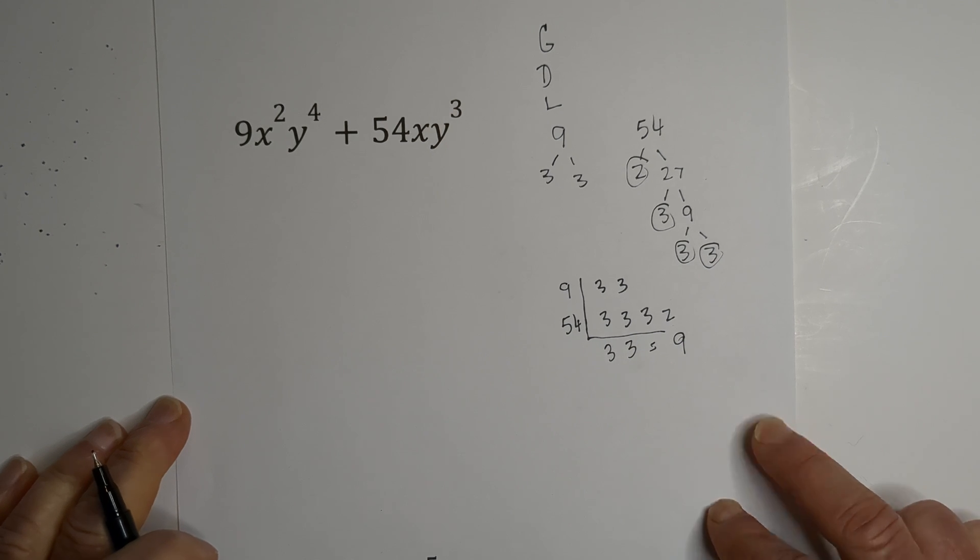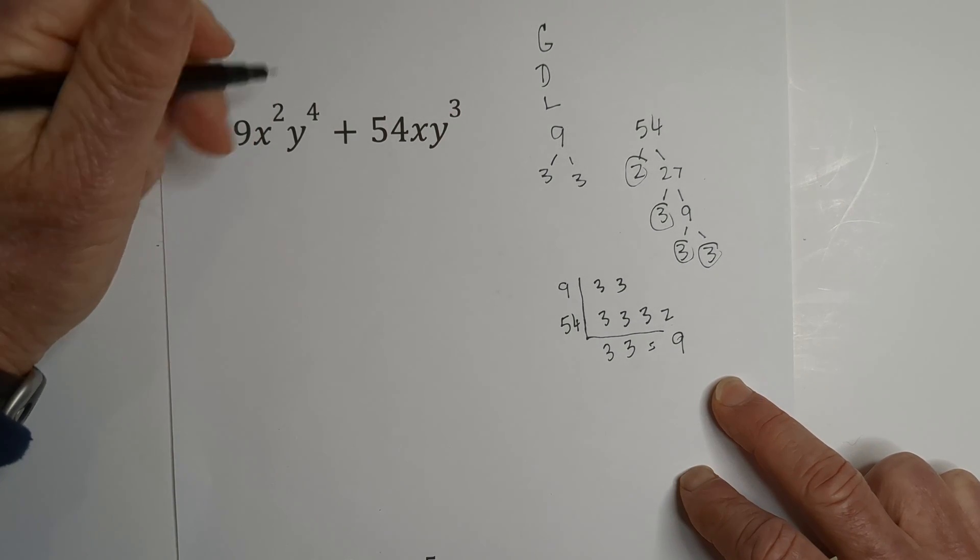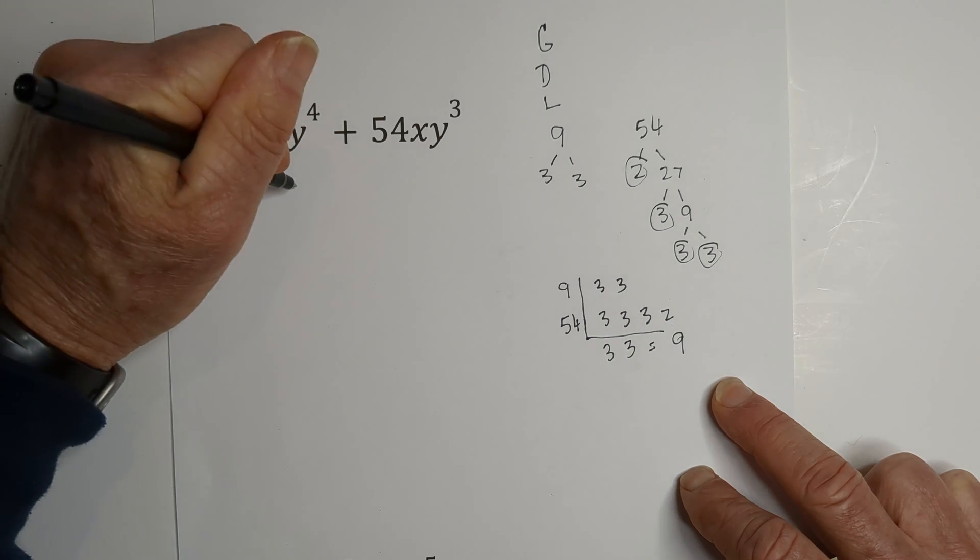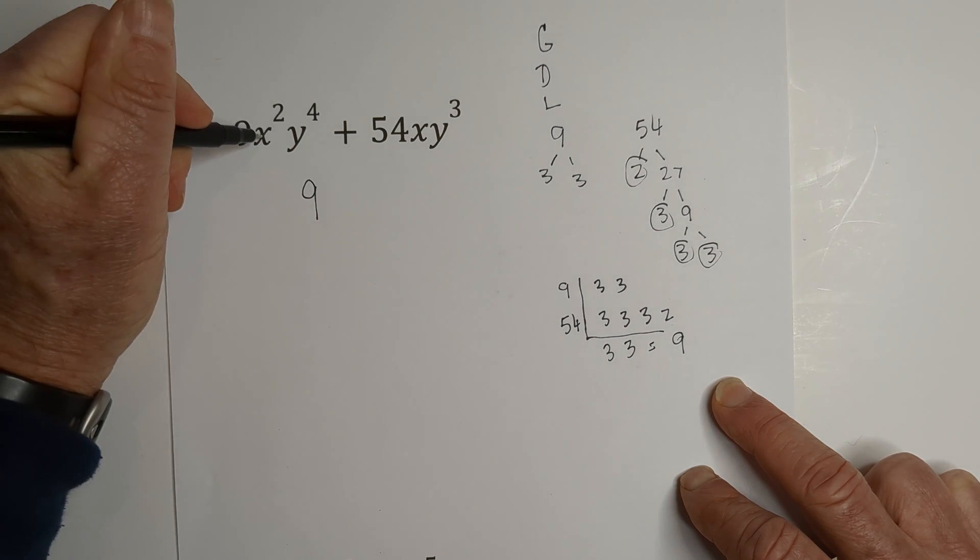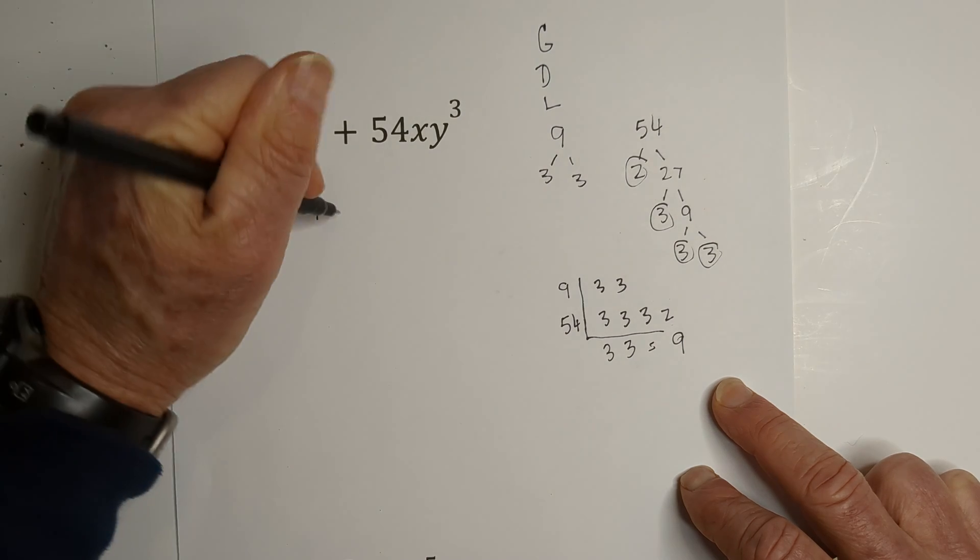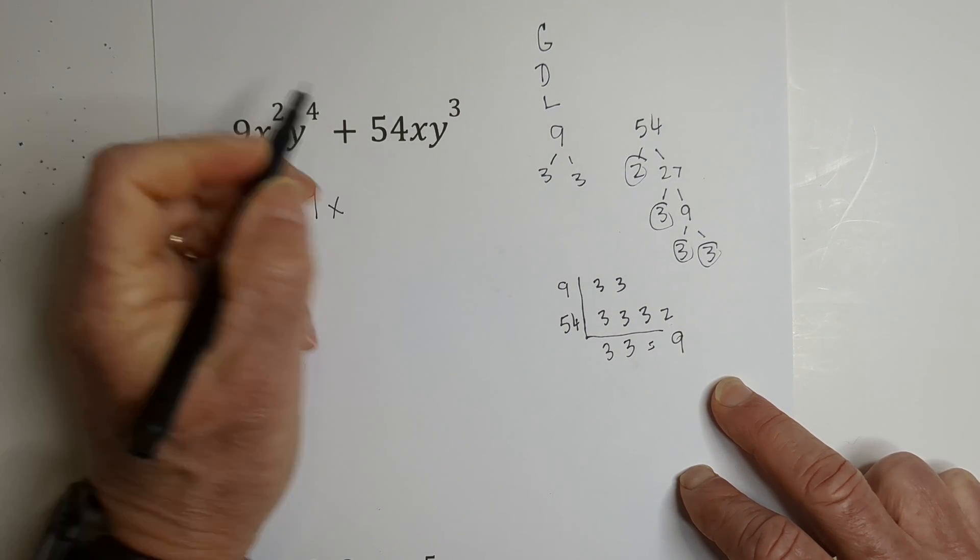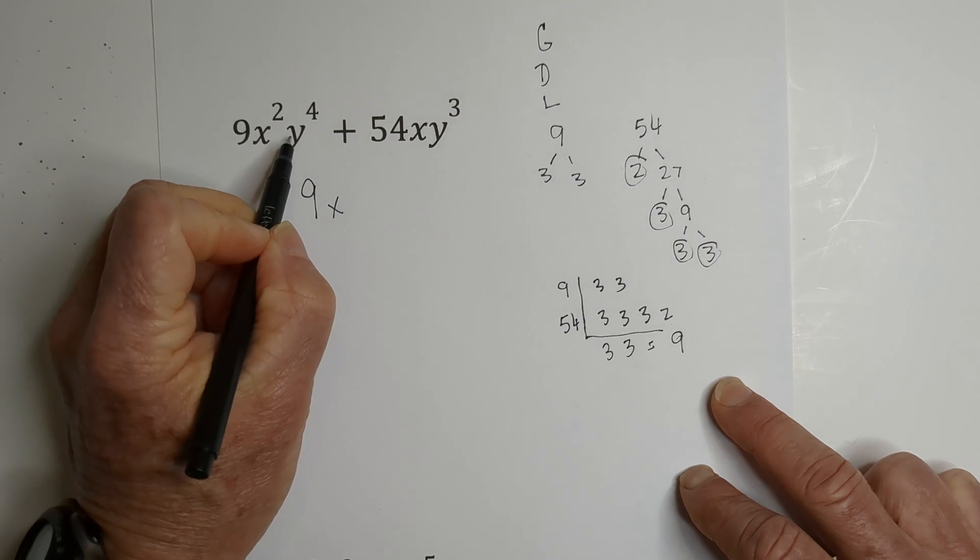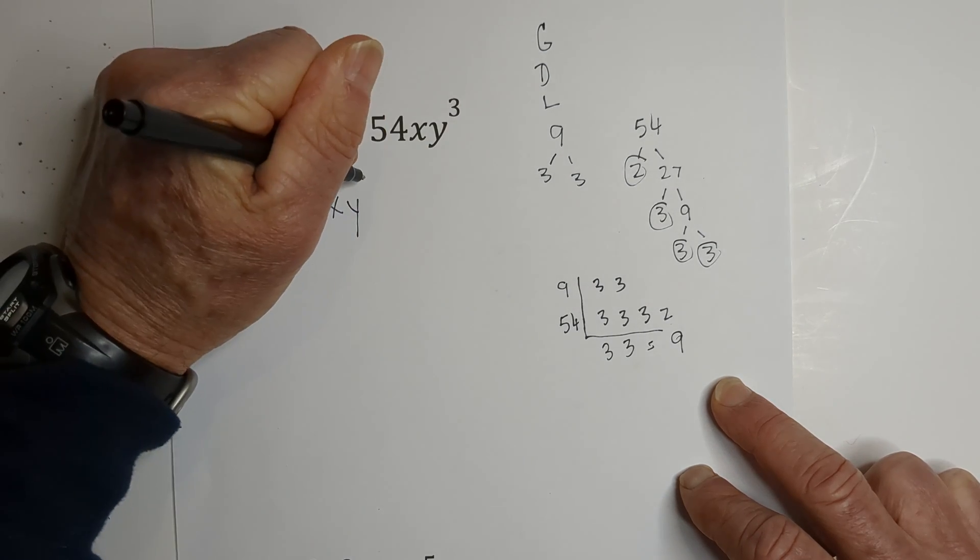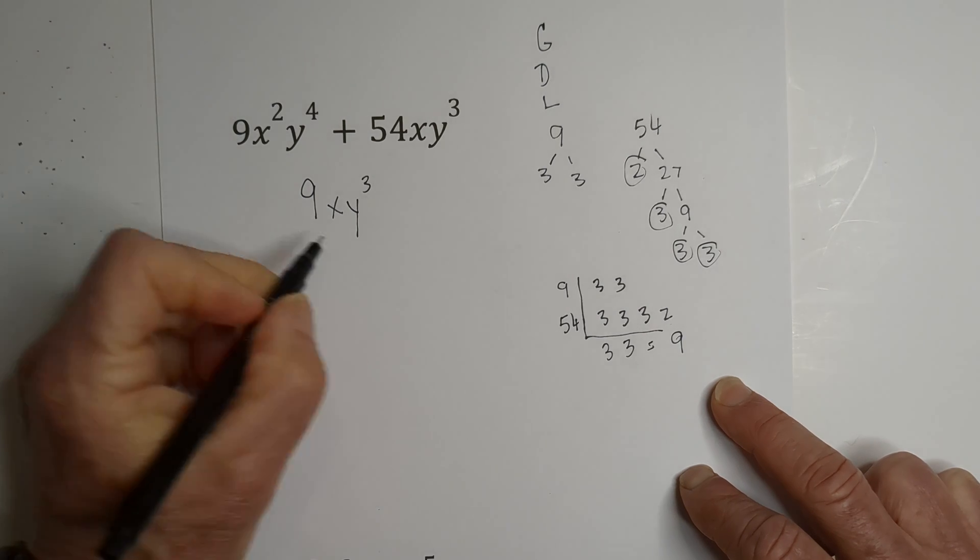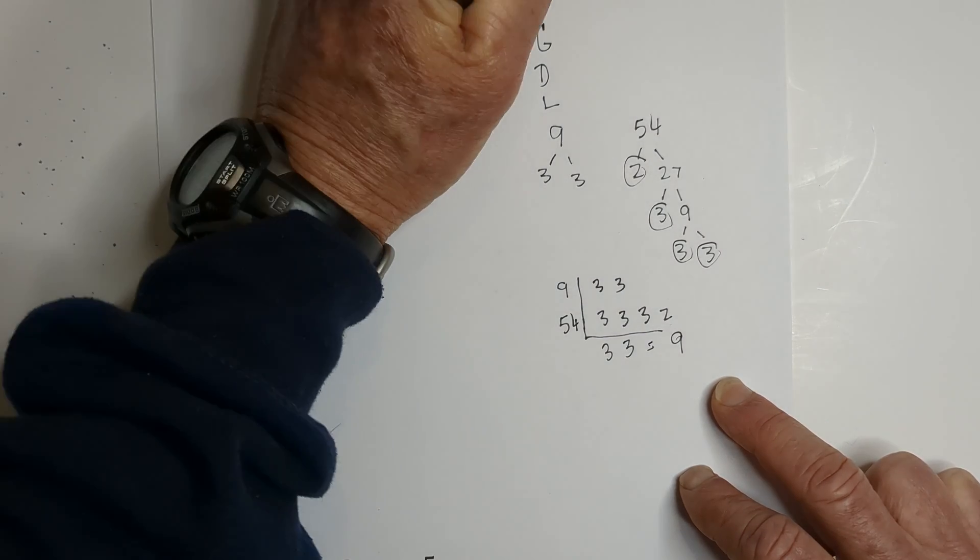Now we need to find the variables. We have an x and an x, and the lowest exponent is one. Then we have a y and a y, and the lowest exponent is three. So the greatest common factor is 9xy^3.